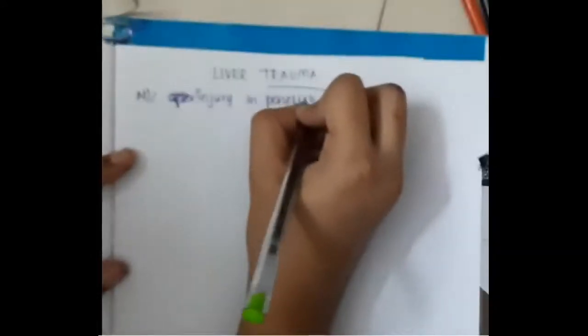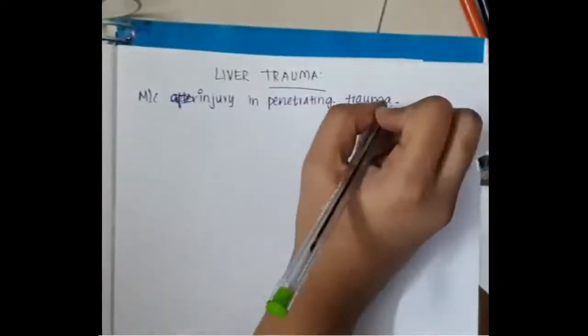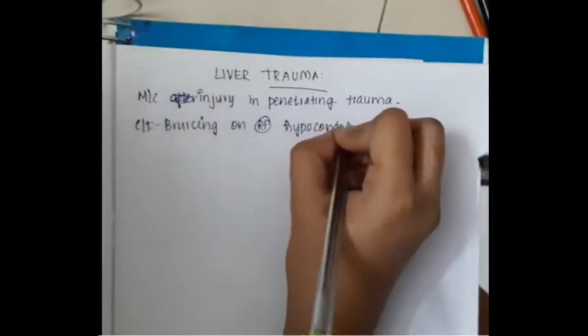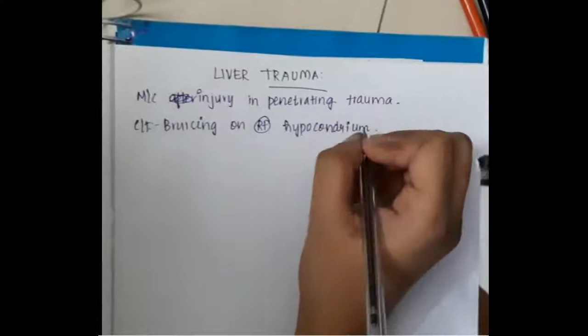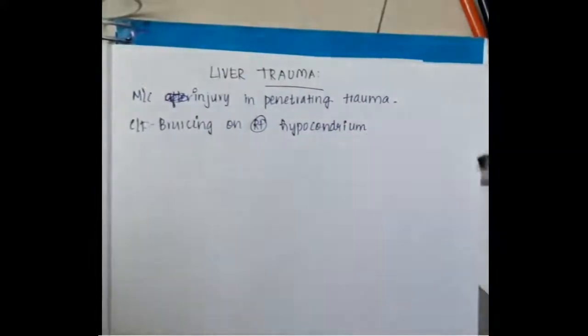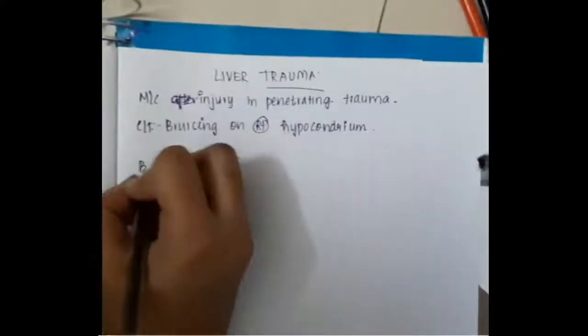Let us learn some important points about liver trauma. Liver trauma is the most common injury in penetrating trauma. Clinical features include bruising seen on the right hypochondrium.